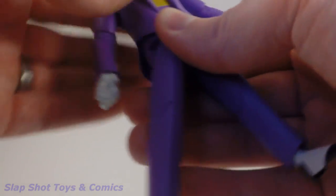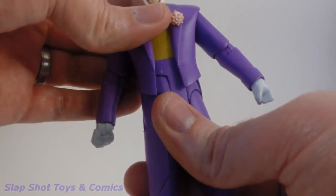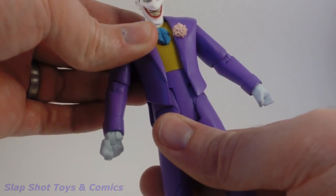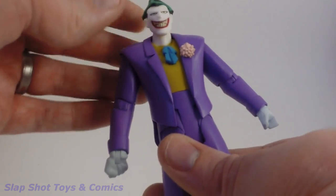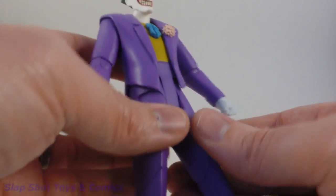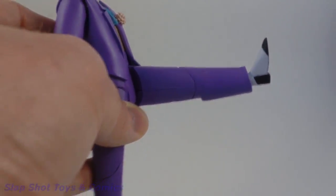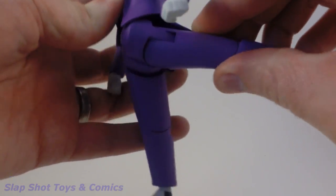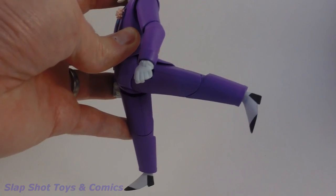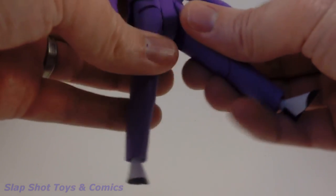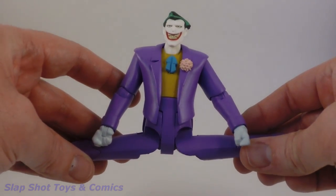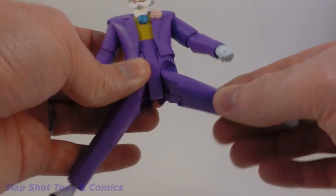As far as the torso, he does have hip swivel, so he does have movement at the hip there. There is no sort of ab crunch or anything like that. As far as the legs, he can kick up quite a bit, so good decent range of motion there. He can kick back again really well, so another good range of motion there. He can do basically the full splits just like the Batman, but you do kind of get that weird gap there in between the legs.